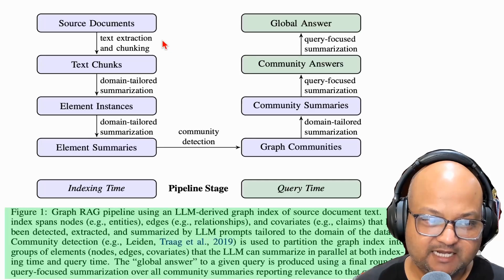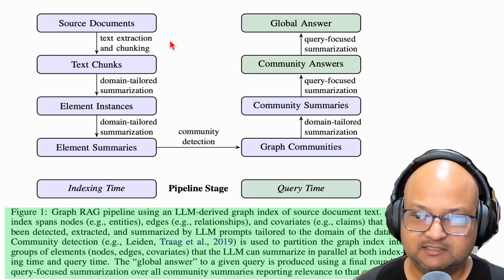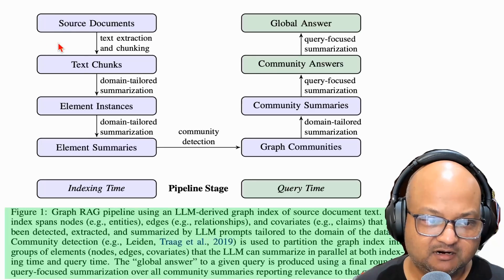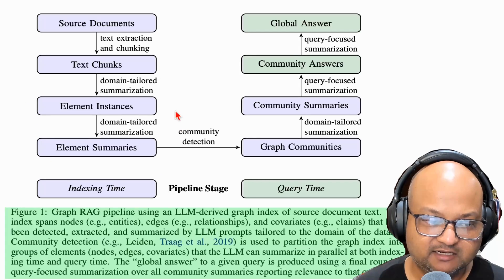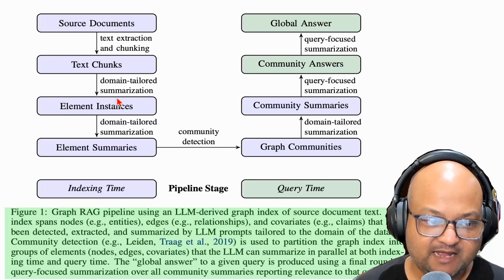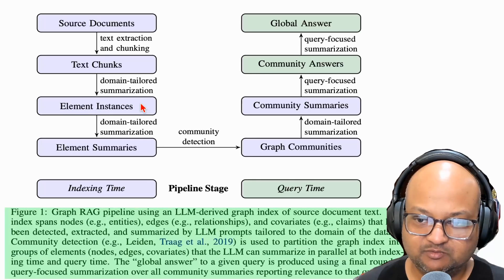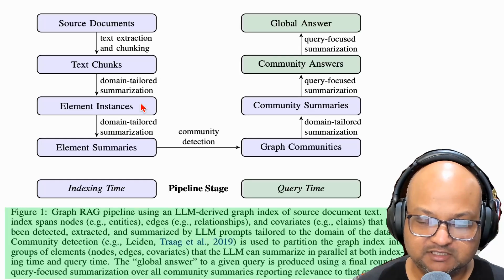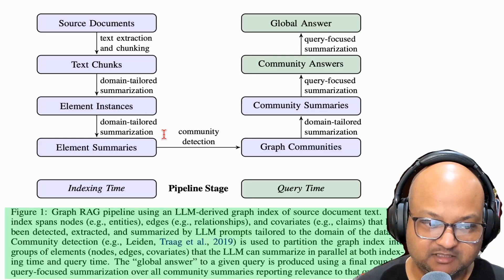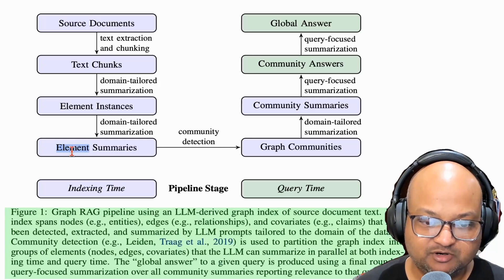The offline steps go something like this. The first couple of steps are familiar: you chunk up your documents. After chunking is where the interesting new stuff happens — you extract element instances. This is where you extract the main entities in your corpus and the relationships among them, and then you summarize them.